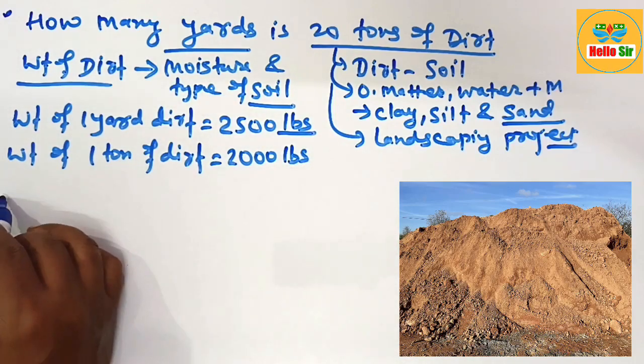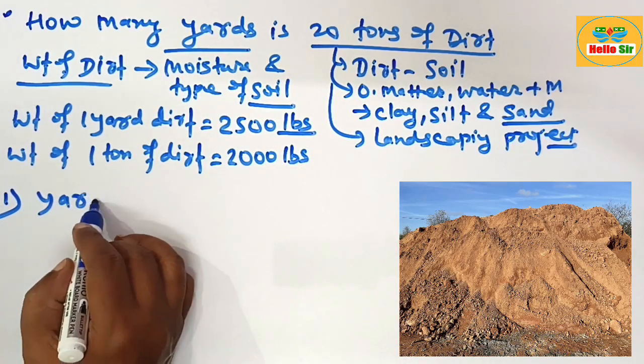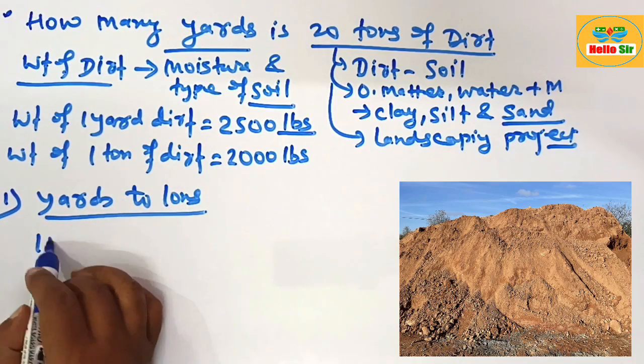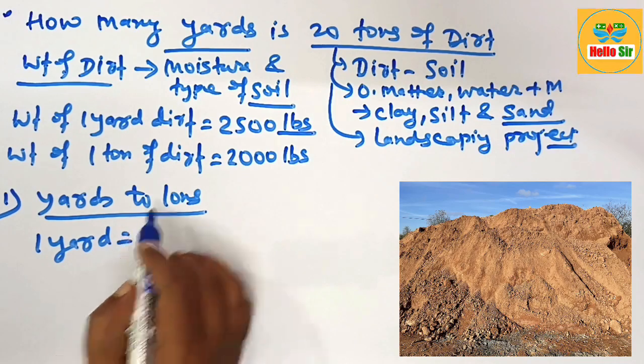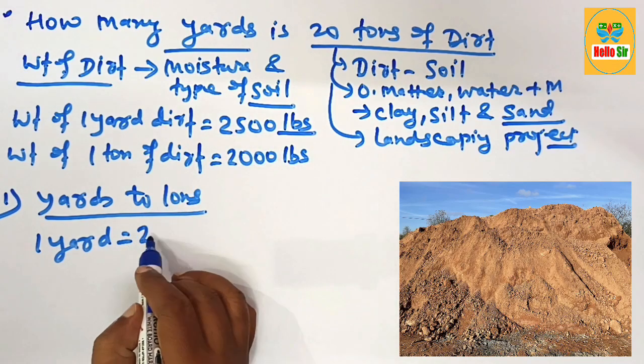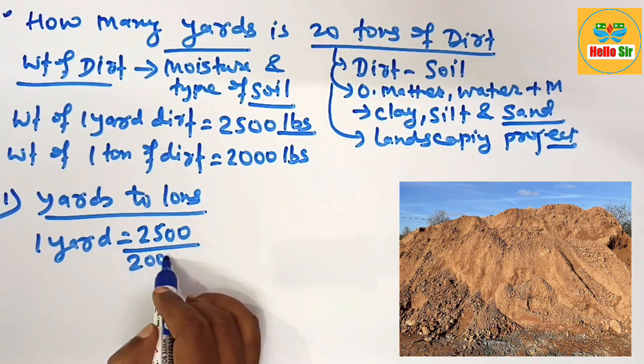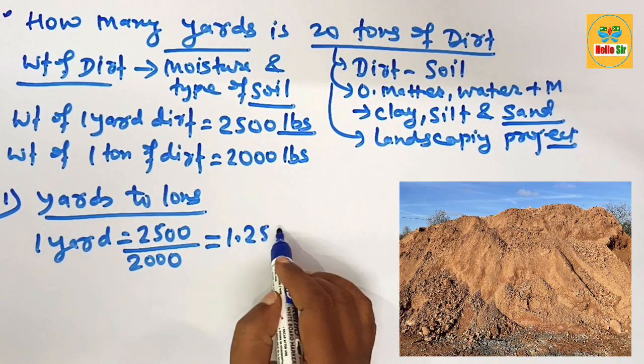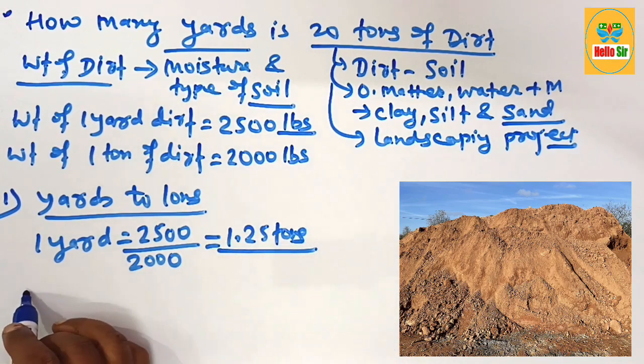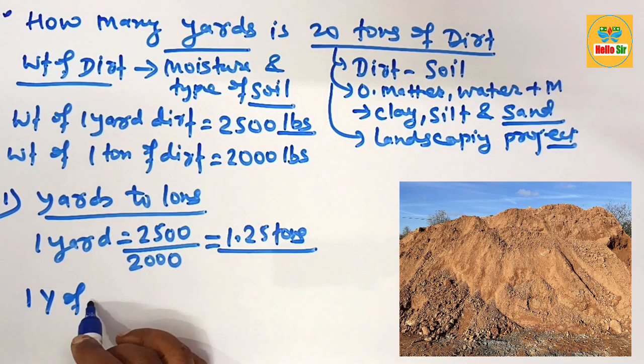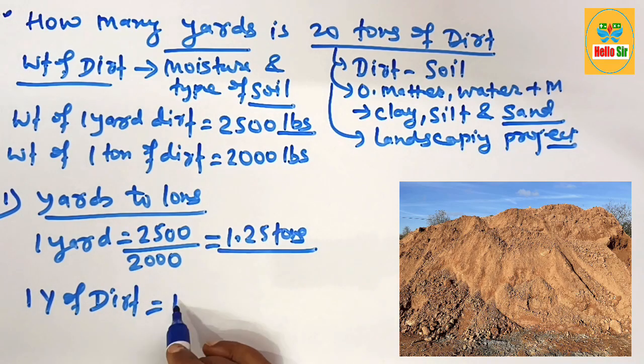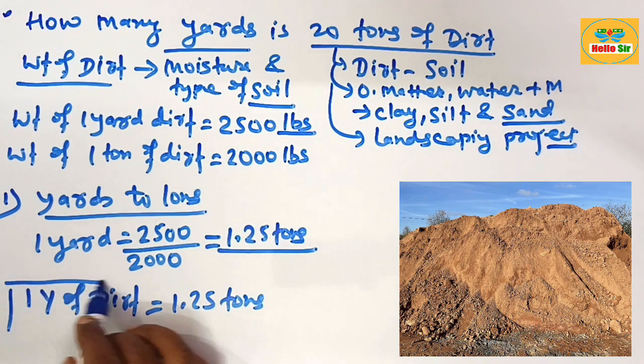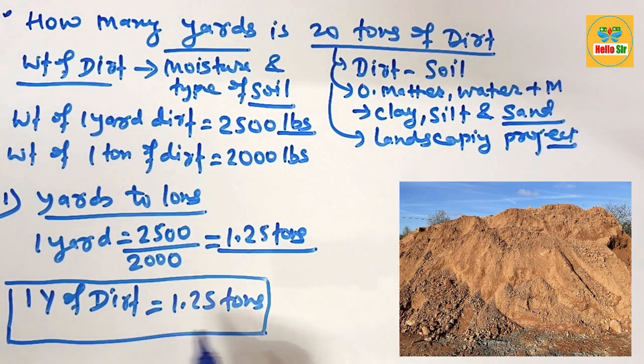Now first we convert yards of dirt to tons. One yard equals, just divide, 2500 divided by 2000, and this comes to about 1.25 tons. Remember this conversion: one yard of dirt equals 1.25 tons. This conversion from one yard of dirt to tons helps in your calculation.